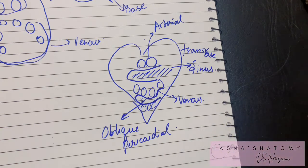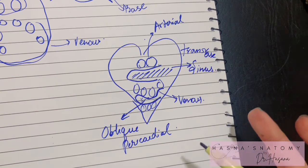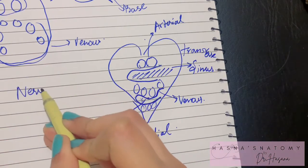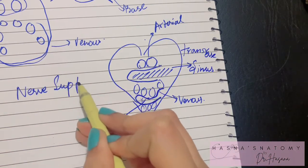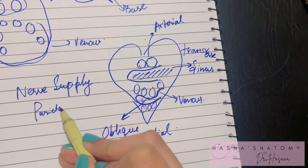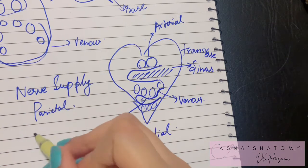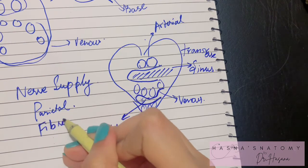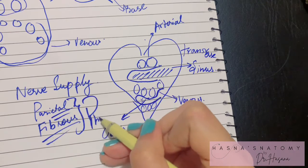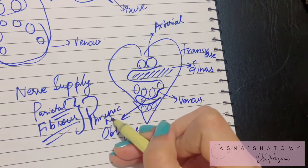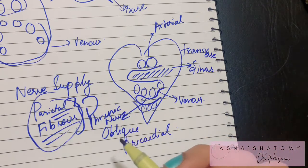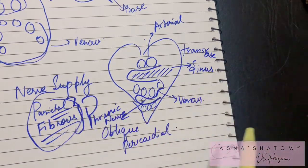The nerve supply of the pericardium is straightforward. Similar to the pleuras, the parietal layer of the serous pericardium and the fibrous pericardium are supplied by somatic nerves — specifically the phrenic nerve. These two layers are pain sensitive. The nerve supply of the visceral layer will be studied with the heart and is supplied by autonomic nerves: sympathetic and parasympathetic.